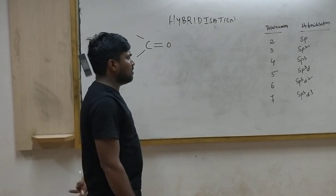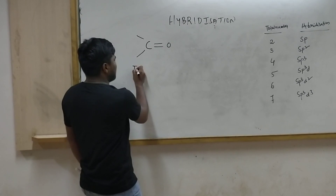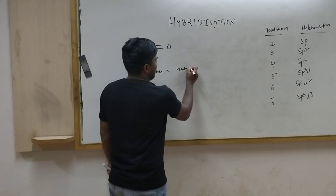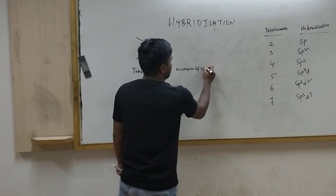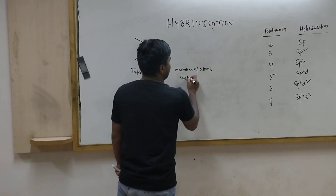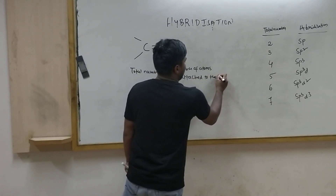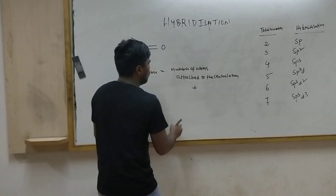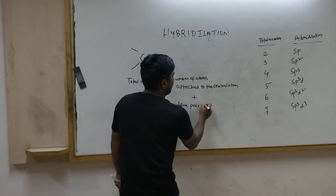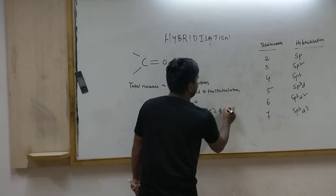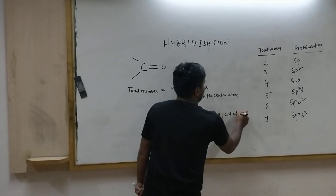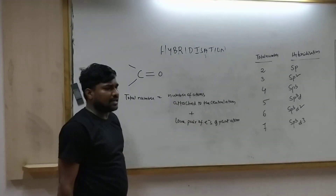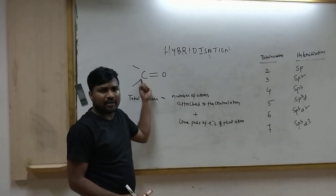Carbon is the central atom. The formula is: total number equals number of atoms attached to the central atom, plus lone pairs of electrons of that atom. You should know this formula.